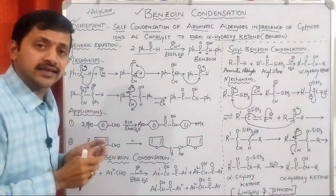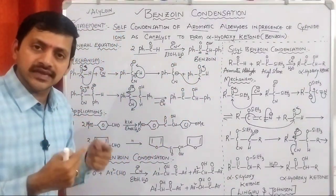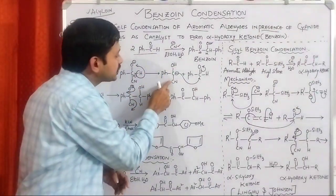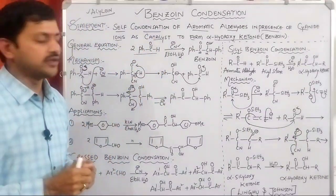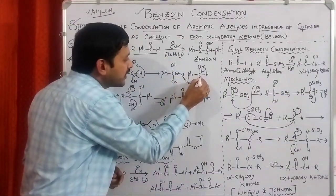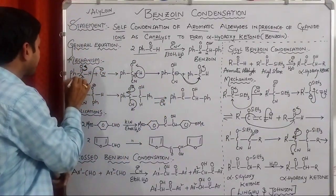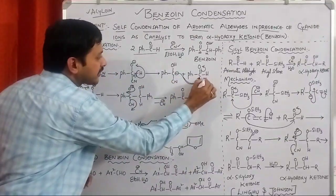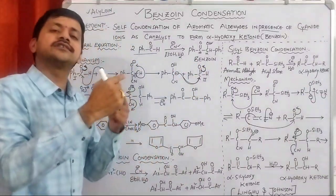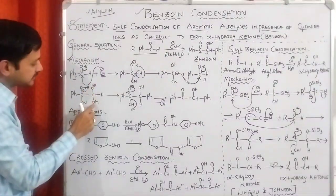To form the carbon-carbon single bond, we need a negative charge on the carbon. The electron-withdrawing group stabilizes this carbanion, which then attacks the carbonyl carbon of the second aromatic aldehyde. The pi-bonding electrons move towards oxygen, and oxygen takes the negative charge, giving Ph-C(OH)(CN)-C(O⁻)-Ph.